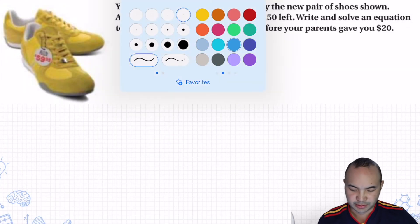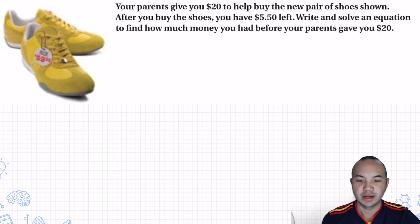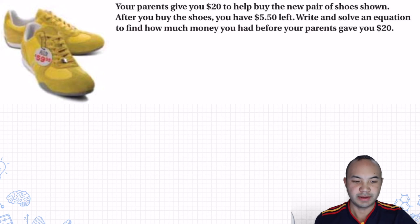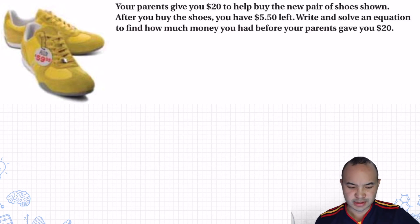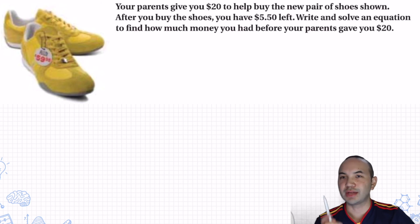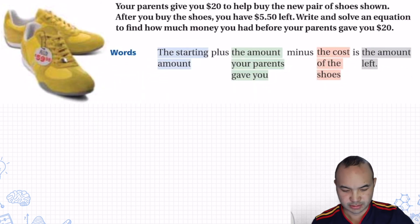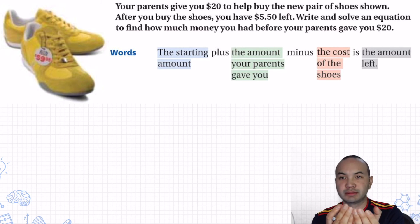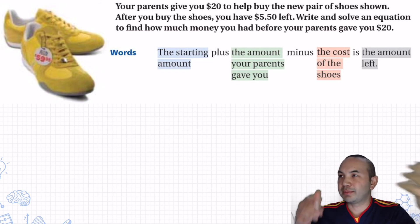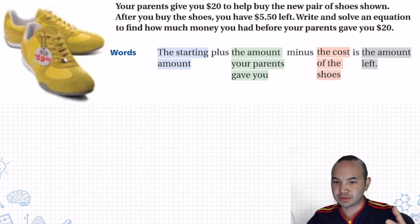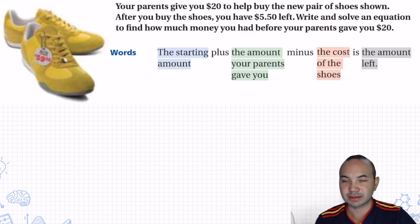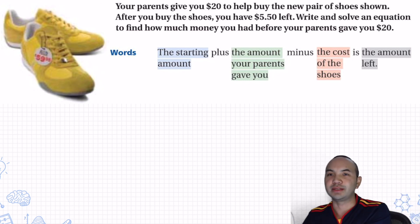Now this word problem: your parents give you $20 to help buy a new pair of shoes. After you buy the shoes, you have $5.50 left. Write and solve an equation to find how much money you had before your parents gave you $20. The starting amount S, plus the amount your parents gave you, minus the cost of the shoes, equals the amount left.